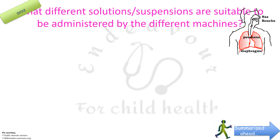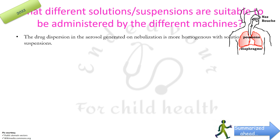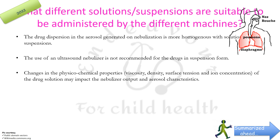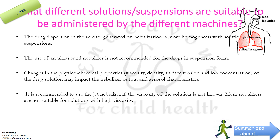Drug dispersion in the aerosol generated on nebulization is more homogeneous when using a solution rather than a suspension — for example, salbutamol respiratory solution in asthma patients. Ultrasonic nebulizers are not recommended for drugs in suspension form. Any change in physical-chemical properties including viscosity, density, surface tension, or ion concentration may also impact the nebulizer output and aerosol characteristics. It is recommended to use the jet nebulizer when the viscosity of the solution is not known, as mesh nebulizers are not suitable for solutions with very high viscosity.